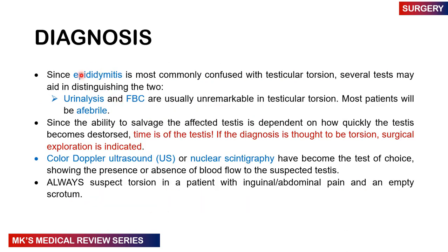Since epididymitis is the most common confusing condition with testicular torsion, several tests must be done to distinguish the two. Urinalysis and FBC are usually unremarkable in testicular torsion, and most patients are afebrile. Since the ability to salvage the testes depends on how quickly it can be restored to its anatomical position — remember, time is testes — if the diagnosis is thought to be torsion, surgical exploration is indicated. Color Doppler ultrasound and nuclear scintigraphy are the tests of choice, showing presence or absence of blood flow. Always suspect testicular torsion in a patient with inguinal or abdominal pain and an empty scrotum.